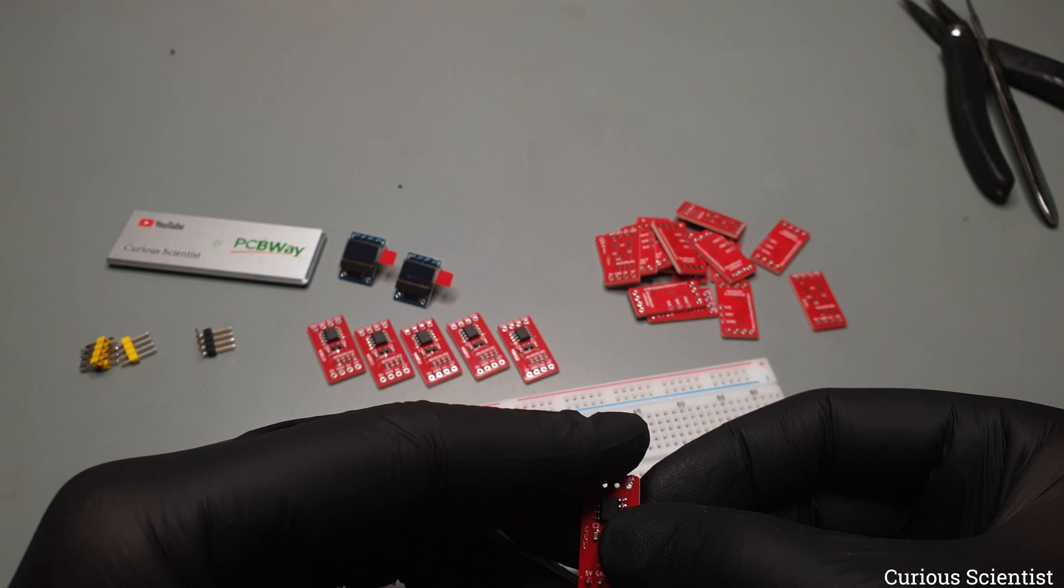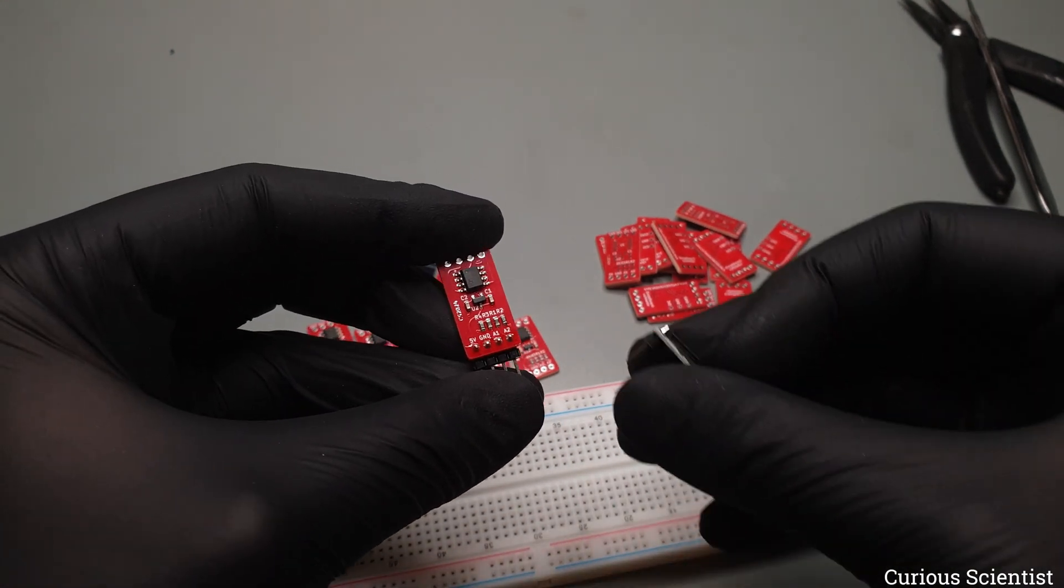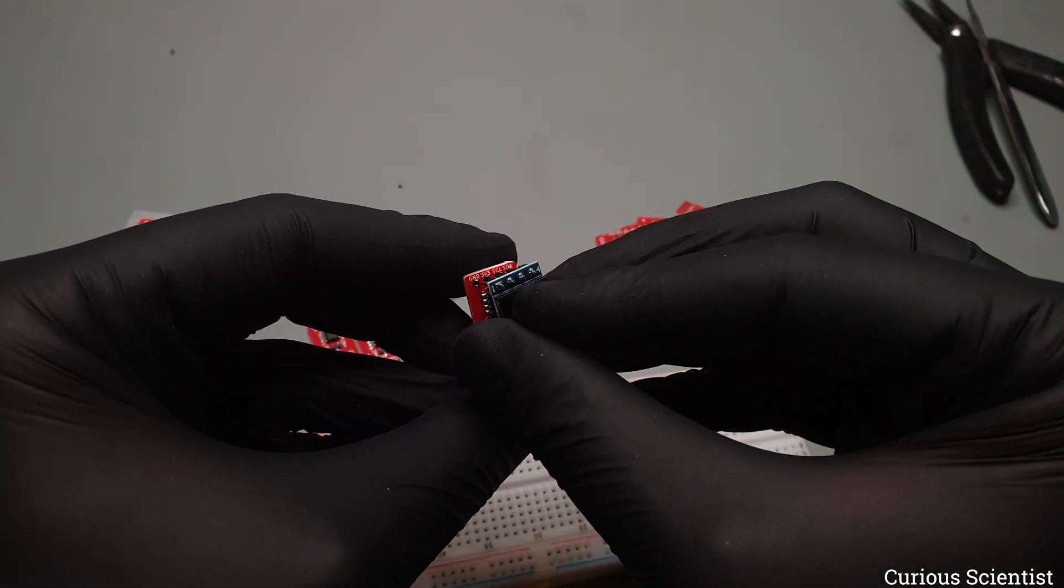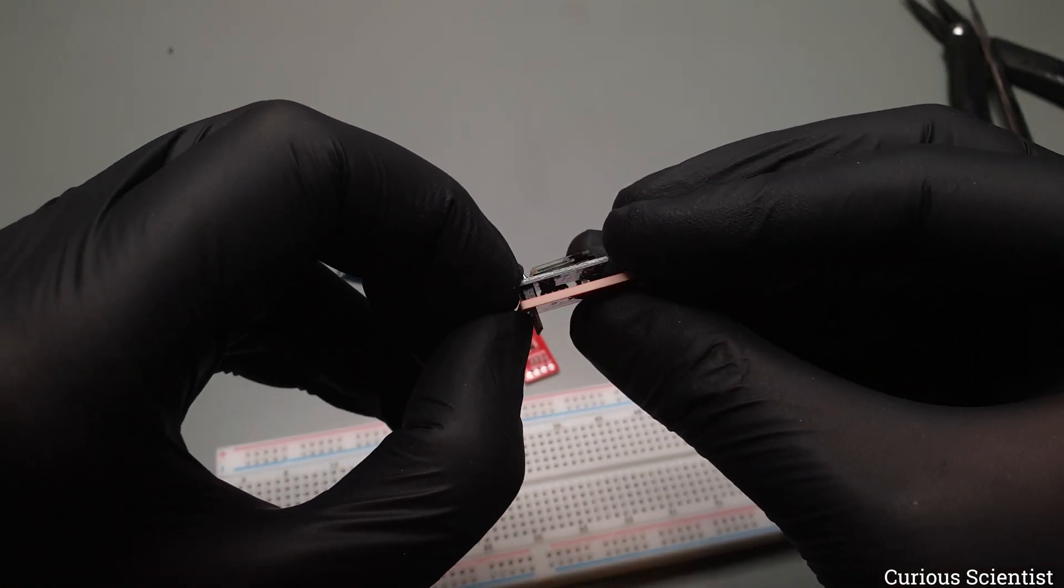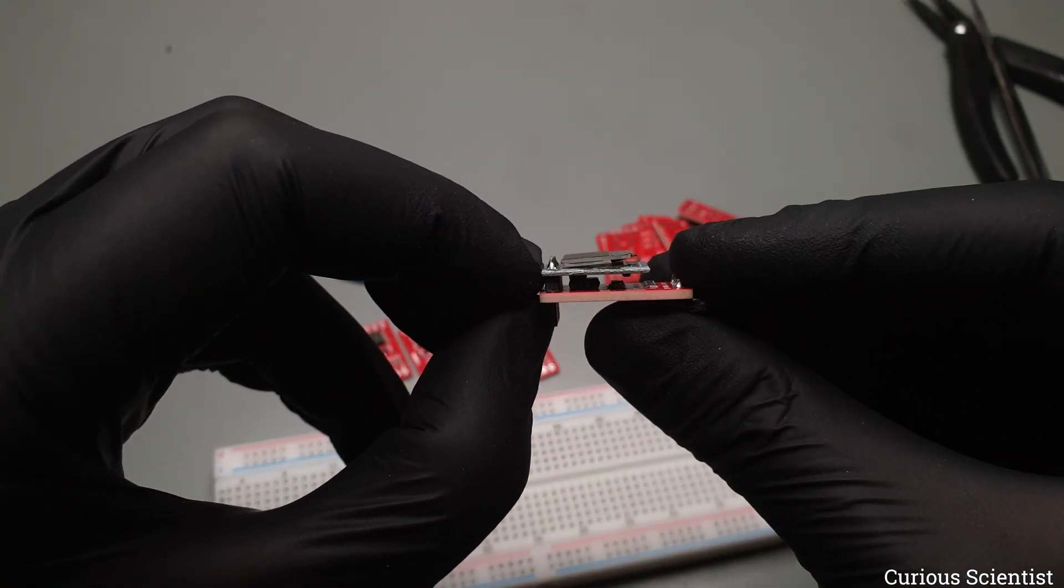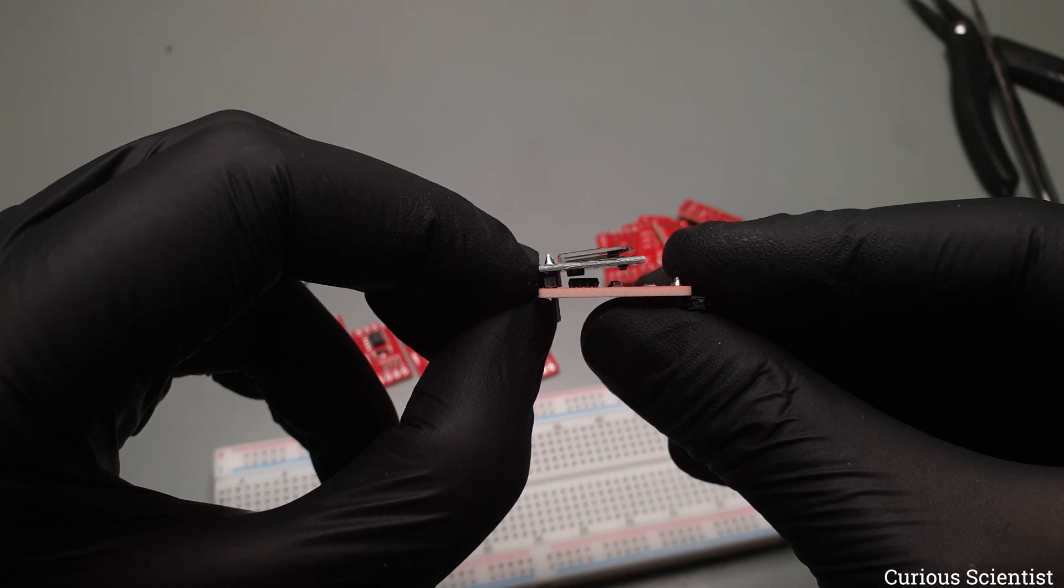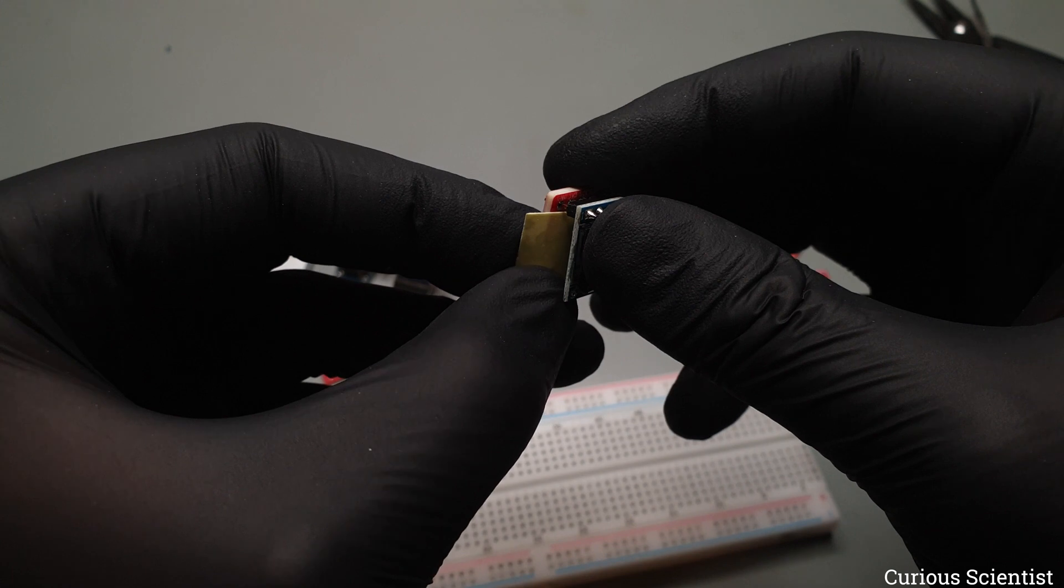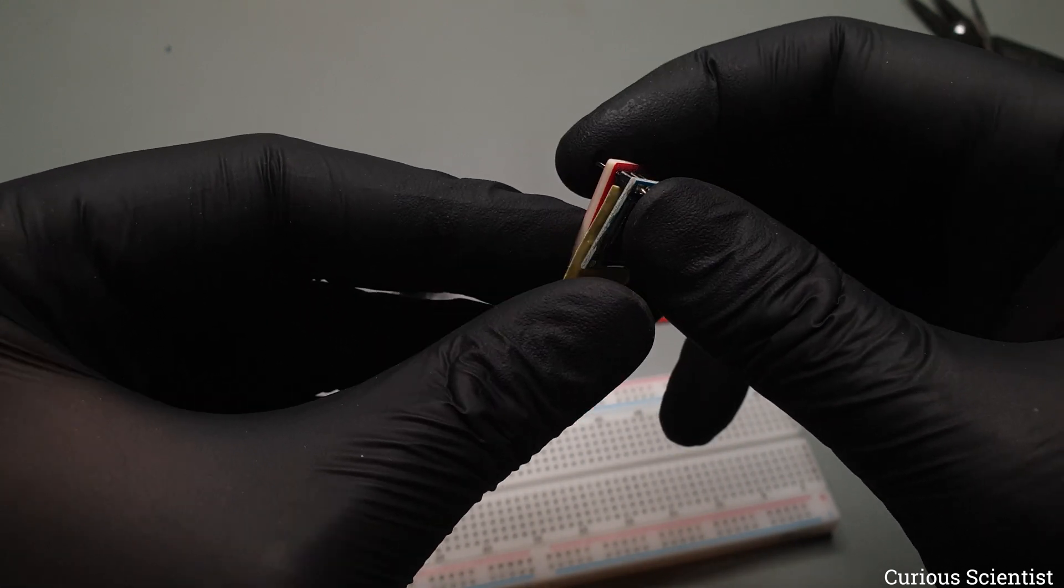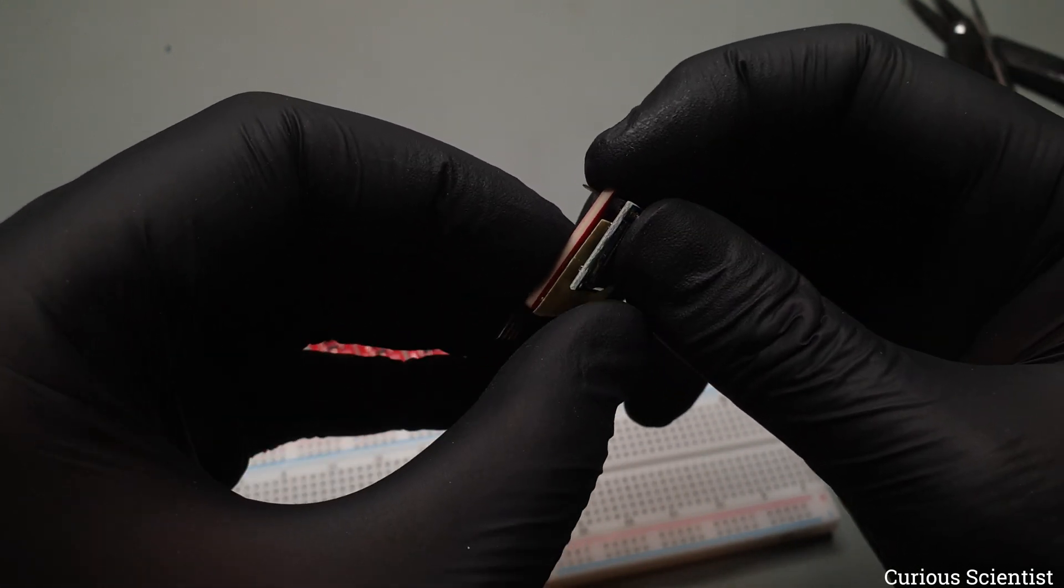The next challenge is soldering the OLED display in place. As you can see, when it is fully inserted, the chip on the OLED display, a voltage regulator if I'm right, is touching the microcontroller. It should not be an issue, but to be sure, I want to have a little air gap between those components. So I just pick a thicker piece of paper and put it between the display and the circuit. This helps me to maintain a small gap while soldering, and then I can remove the paper when I'm finished.